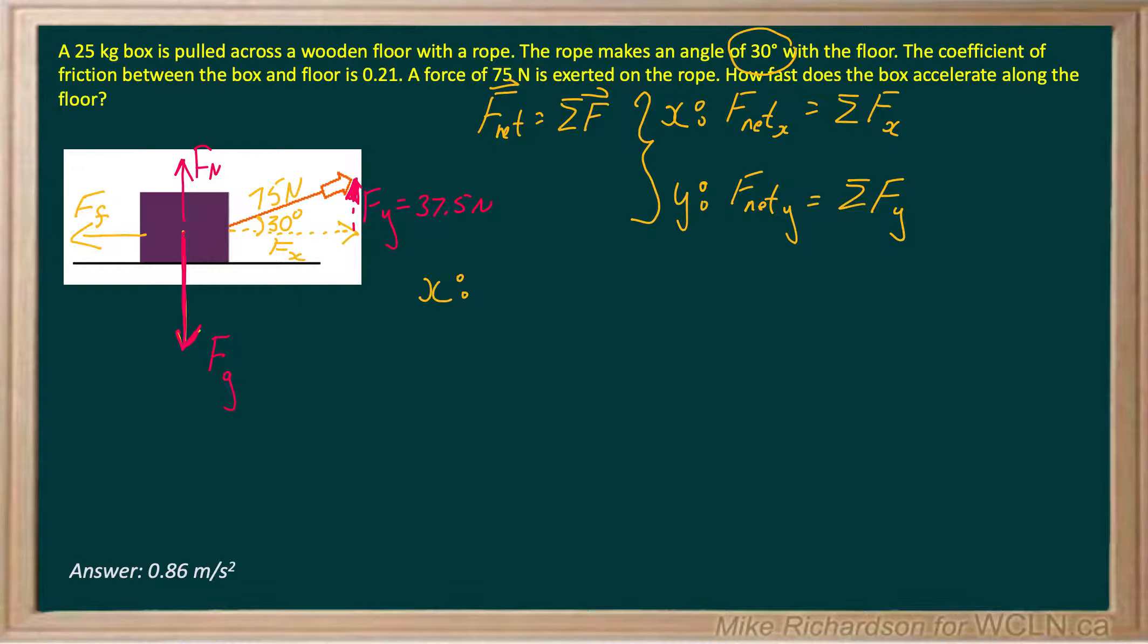Similarly, if I go 75 cos 30, because the Fx is on the adjacent side, I will get my x component. And it turns out that it will be 64.95. I'm going to leave a few decimals there. So I've got all my forces broken down into components that are both parallel and perpendicular to the motion. That's important because when we do that, it will make our solution as simple as possible.